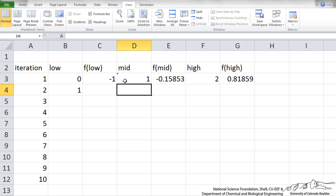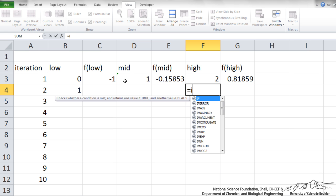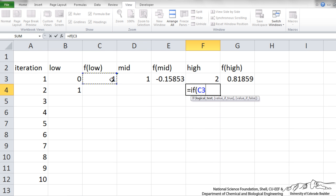Similarly to redefine the high bound I can use the if. If the low function times the midpoint is less than zero which it is in this case then we want to redefine the high point as the middle. Otherwise we want to keep it as the current high bound.